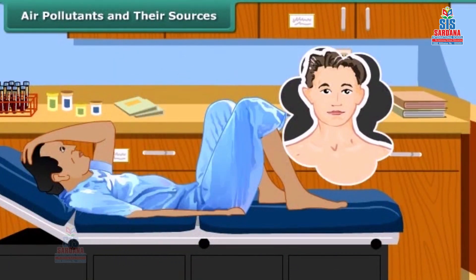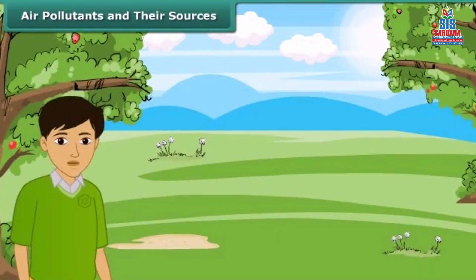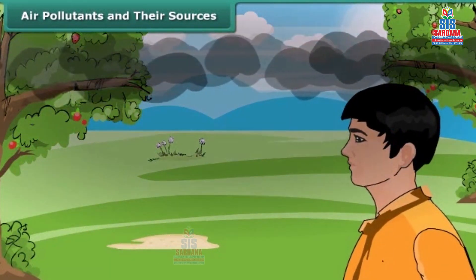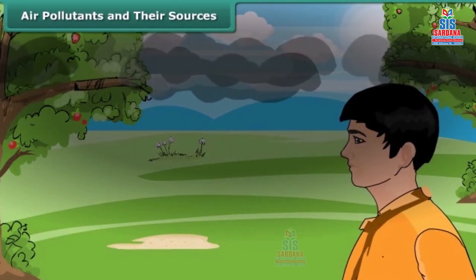These gases can make healthy people sick and sick people even worse. They affect your eyes and throat. In some cases, they can permanently damage your lungs and even cause cancer. Smog is made up of smoke and fog. Smoke generally contains oxides of nitrogen and other air pollutants. Smog causes breathing difficulties such as asthma, cough, and wheezing in children.